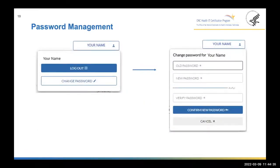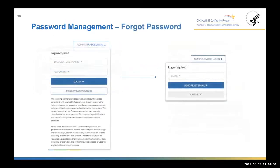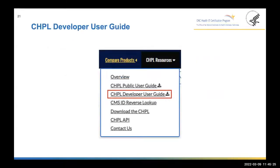If at any point while navigating CHPL as a developer you need to change your password, click your name in the upper right of the navigation bar and select 'Change Password.' This will prompt new fields to enter your old password and create a new one. Click 'Confirm New Password' when done. If you ever forget your password and are unable to log in, select the 'Administrative Login' button at the top right of the navigation bar and select 'Forgot Password.' This will bring up a field to enter your email address, and CHPL will send a password reset email.